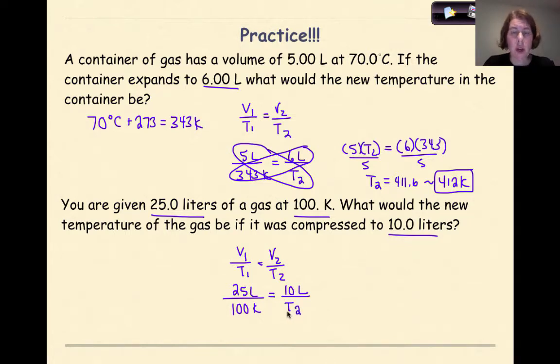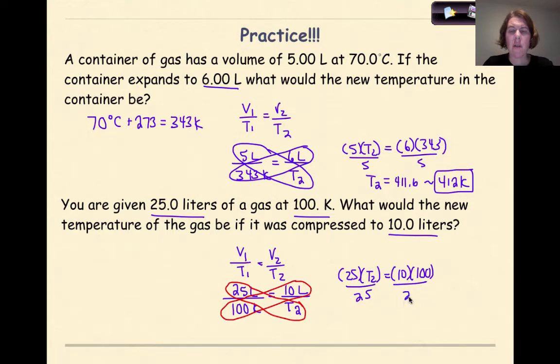So again, I'm going to cross multiply here. So it's going to be T2 times 25 and 10 times 100. So when I write this out, it'll be 25 times T2 is equal to 10 times 100. And I'm going to divide both sides by 25. And when I solve for my T2 here, my final answer will be 40 Kelvin.